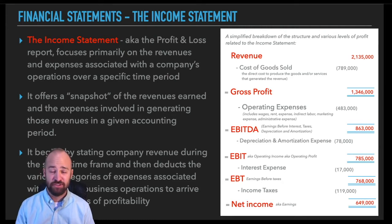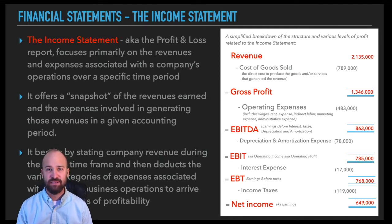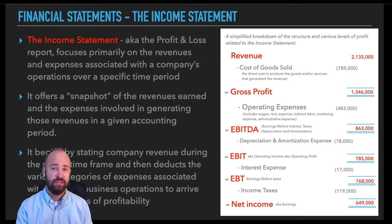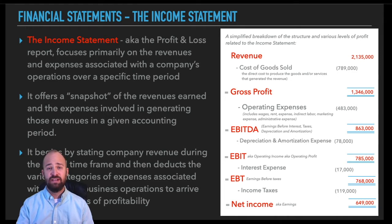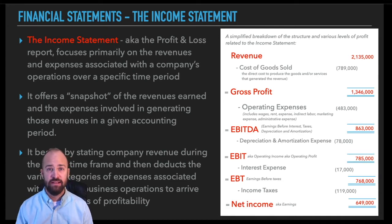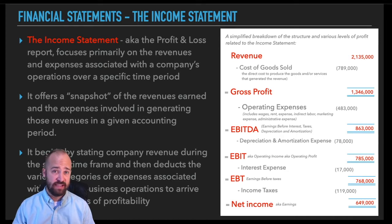Net income is obviously a big deal — it's essentially what people mean when they say a company 'releases earnings.' The financial statements are what's actually released, and net income is the bottom line. You want to see a healthy growth rate in net income. That said, net income is susceptible to distortions. Financial statements are subject to GAAP rules, and there are ways accountants can massage net income figures. Companies' accountants and lawyers will do everything they can to make net income look as favorable as possible.